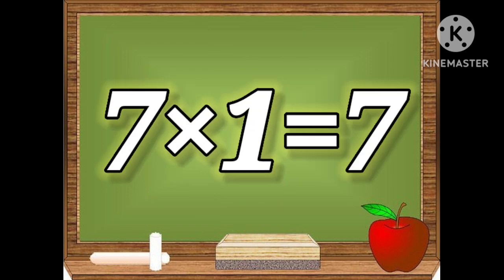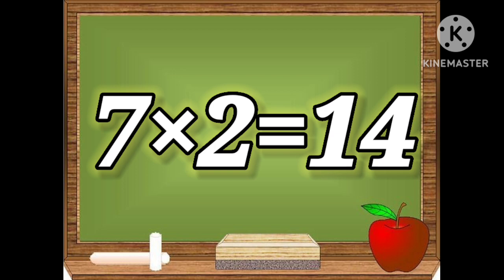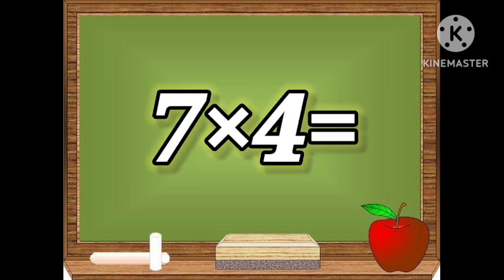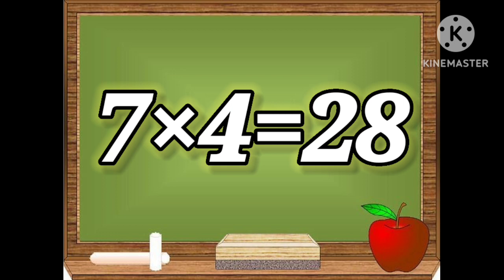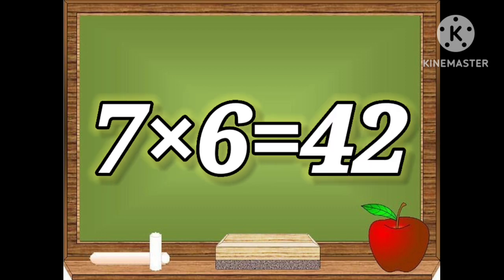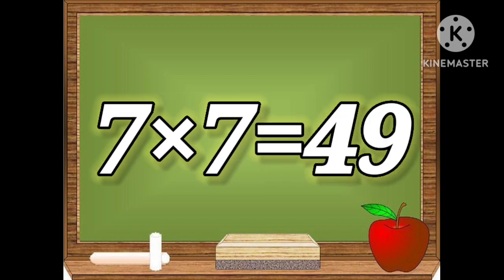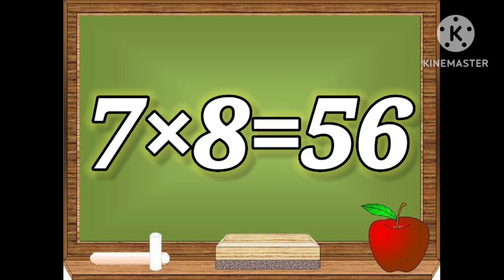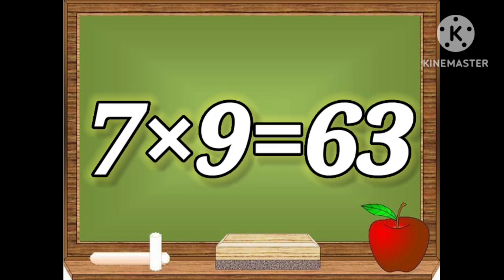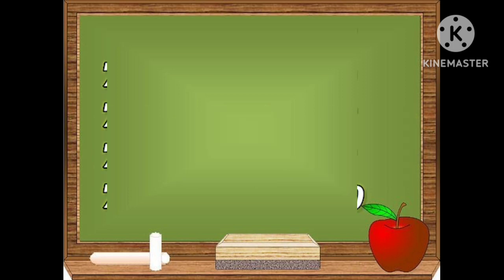Seven ones are seven. Seven twos are fourteen. Seven threes are twenty-one. Seven fours are twenty-eight. Seven fives are thirty-five. Seven sixes are forty-two. Seven sevens are forty-nine. Seven eights are fifty-six. Seven nines are sixty-three. Seven tens are seventy. Let's repeat the table.